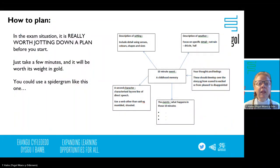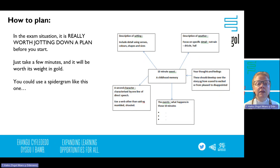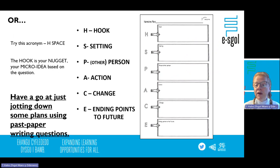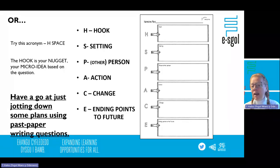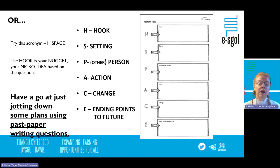Here are some more ways to plan. For a descriptive piece with 10 minutes of planning: think about the description of the setting, the weather, your thoughts and feelings, what happened, and who the second character is — a quick brainstorm before you start. Another planning method is the H-SPACE acronym: Hook, Setting, Person, Action, Change, End. That idea of bringing a change in is a really good way to hit higher marks with that sophisticated structure and language for effect.